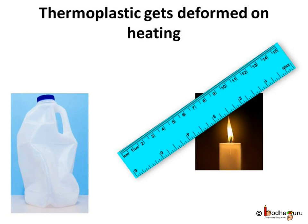Few bottles or containers get deformed if we pour hot liquid into them. Such plastics that get deformed easily on heating and can be bent easily are known as thermoplastics. Polythene, PVC etc. are common thermoplastics that we use regularly.